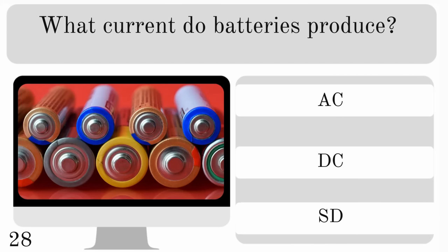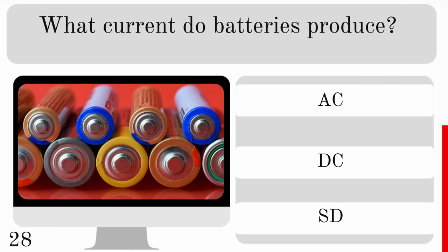What current do batteries produce? AC, DC or SD? The answer is DC, direct current.